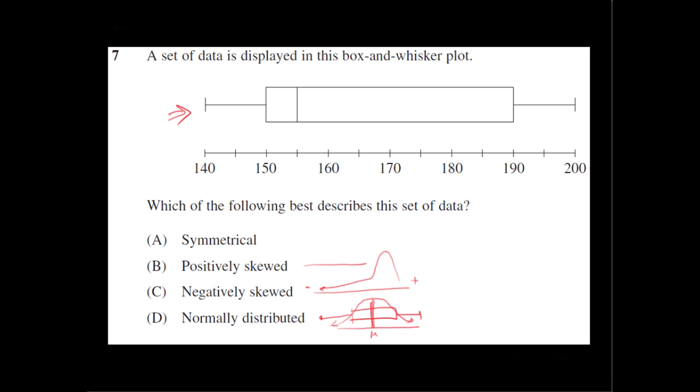Positively skewed would look something like—it would be the opposite. So this is the positive end, this is the negative end. So we're stretched on the positive end, and it will be bunched up towards the negative end.